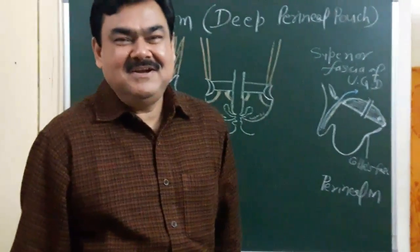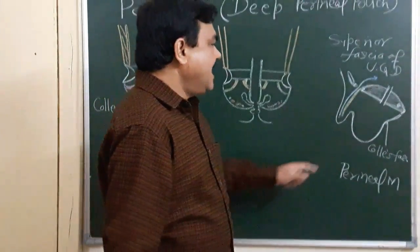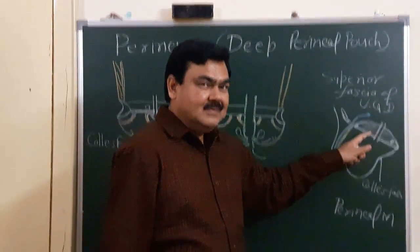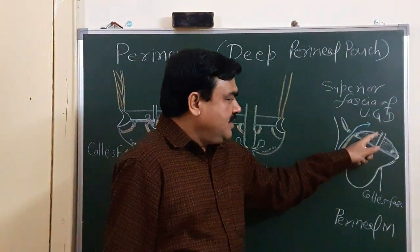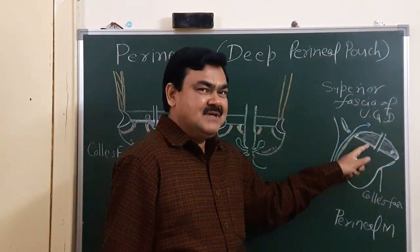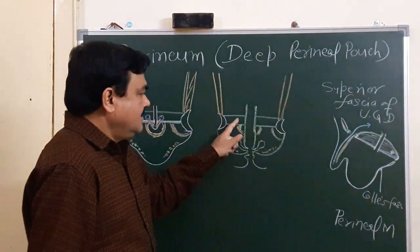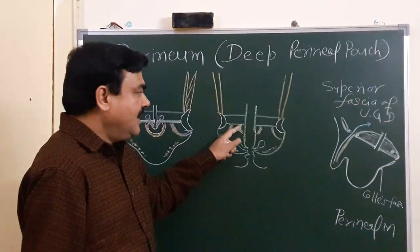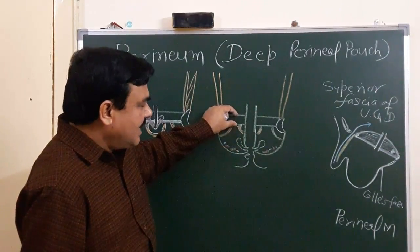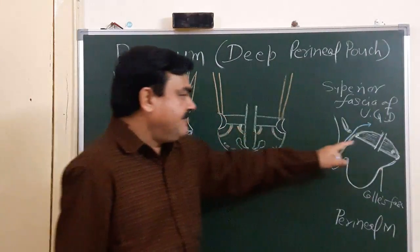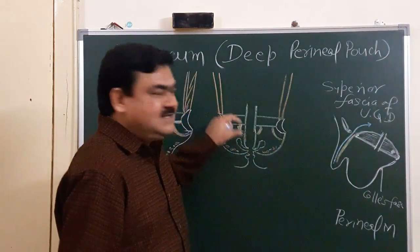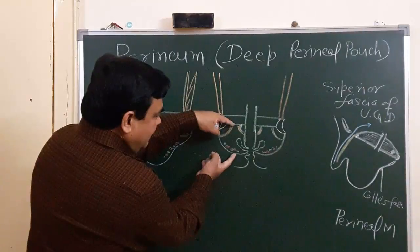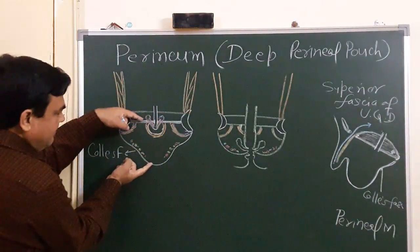I'll discuss the deep perineal pouch. In this diagram you can see the urogenital diaphragm, covered by superior and inferior fascia of the urogenital diaphragm. The inferior fascia forms the perineal membrane. In coronal section, the space between these two fascia is known as the deep perineal pouch. This is the superficial perineal pouch, and this is the deep perineal pouch.